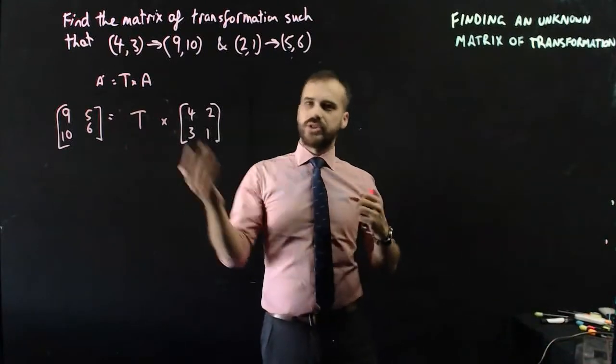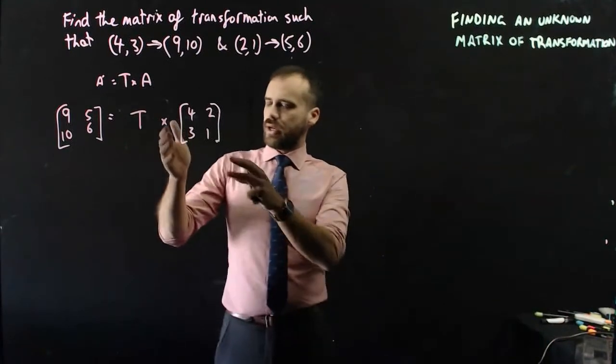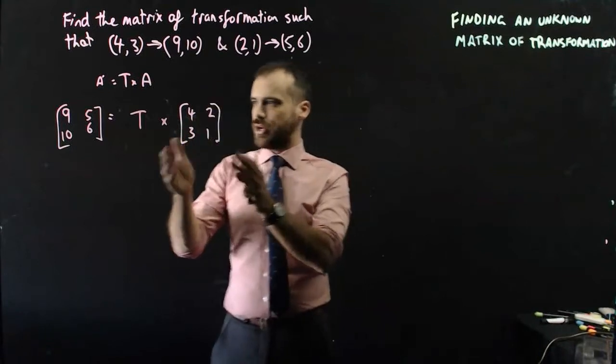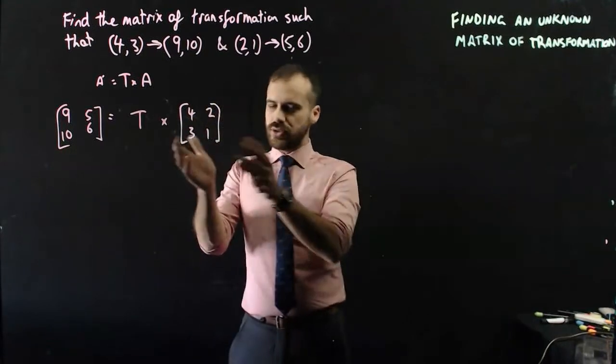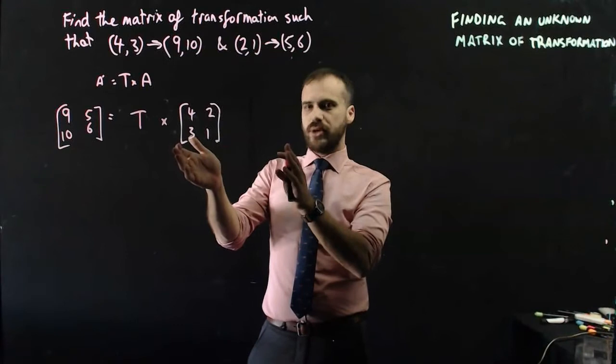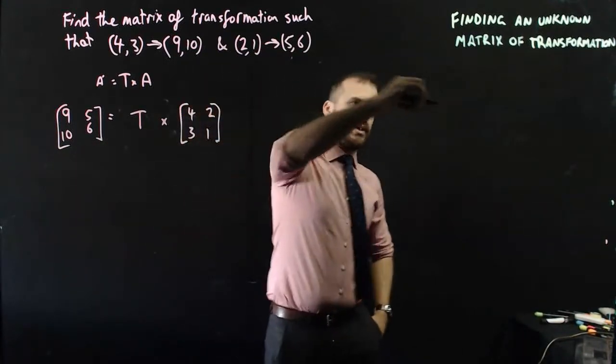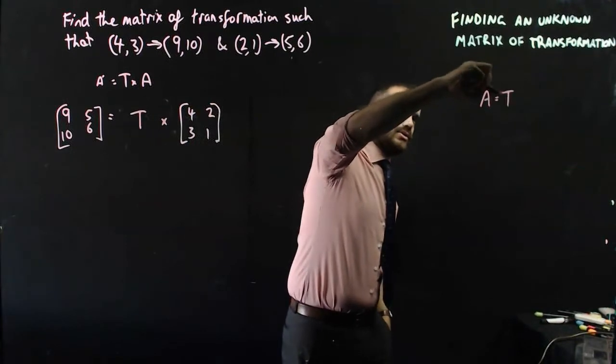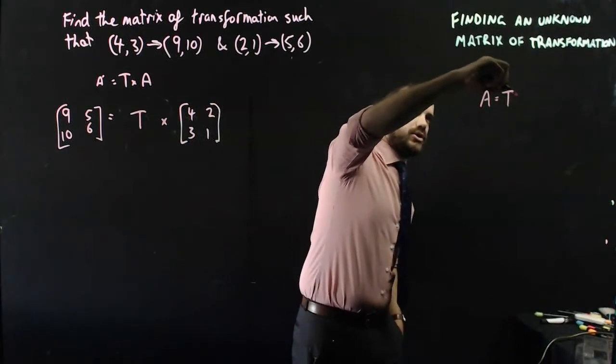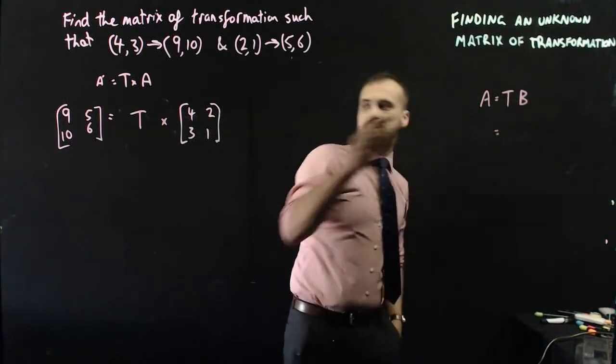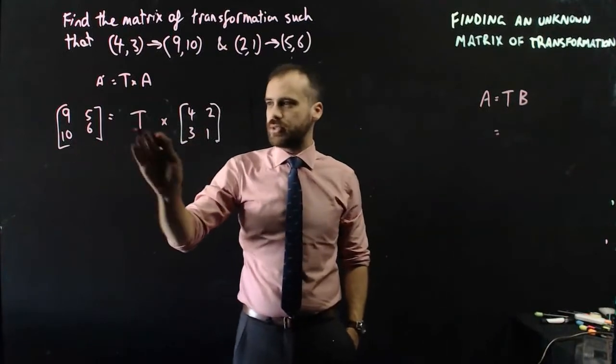Now the question is, how do I solve for T? Well, I need to take this and move it over to the other side. And to do that, I'm going to use some post-multiplication. I'll jump through it over here really quickly. A equals T times B, which is what this is in the form of, A equals T times B.